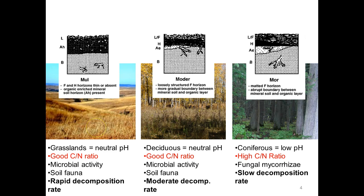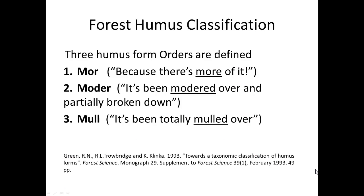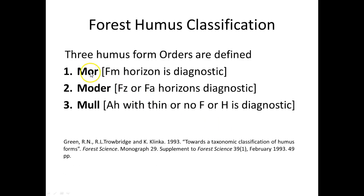The mull will be in grasslands; you tend to find moders in deciduous stands, and sometimes a mull. The mor is characteristic of coniferous stands. A memory aid: the mor — because there's more of it; the moder — it's been motored over and partially broken down, very crumbly; and the mull has been totally mulled over. The F and H horizons are very thin in a mull, which tends to have a nice thick AH horizon. Diagnostic horizons: FM is diagnostic of a mor, FZ or FA of a moder, and AH of a mull.